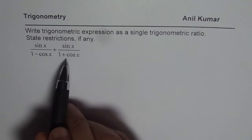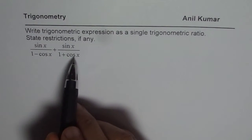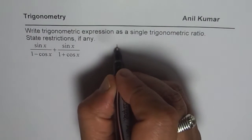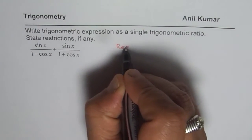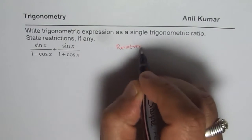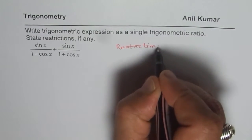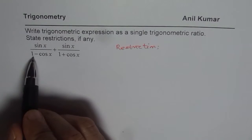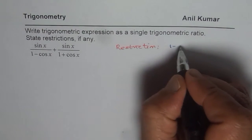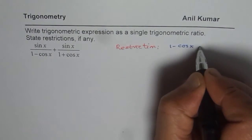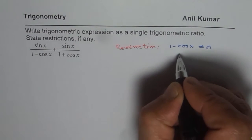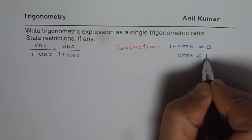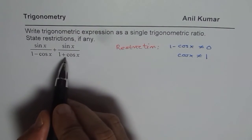The denominator cannot be 0 — that leads to restrictions. The restrictions are when the denominator is 0. So the first restriction is that 1 minus cos x should not equal 0, which means cos x should not equal 1.